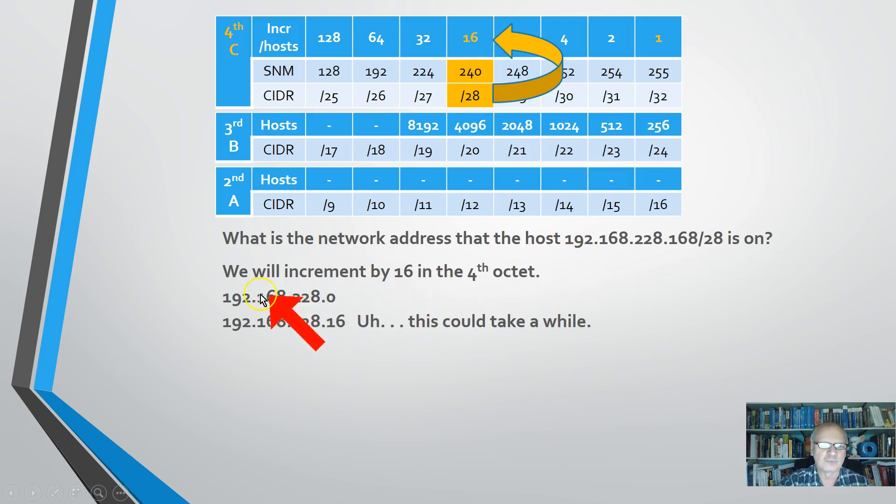Well, here's the problem. Fourth octet, 0, 16. Oh man, it's going to take me a long time to get to 168. So is there a way that I can do this more quickly? Well, yes there is. And this is a little trick that I use. Here's what I realized.